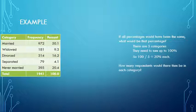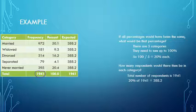The next question is how many respondents would there be in each category. In that case, the total number of respondents is 1941, and 20% of 1941 is 388.2. So we would expect, if the percentages were all equal, 388.2. You might notice these do not exactly add up to 100%, but that's due to rounding errors.